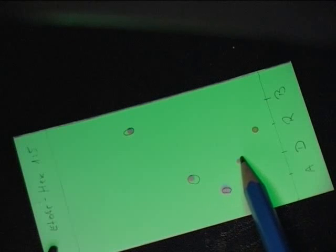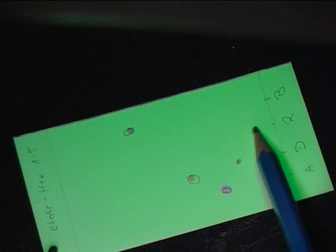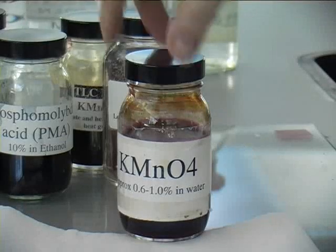The TLC plates are impregnated with an indicator that shows up under a certain wavelength under UV light. That's the light green color. And after you've marked your TLC plates, you can try another type of visualization.